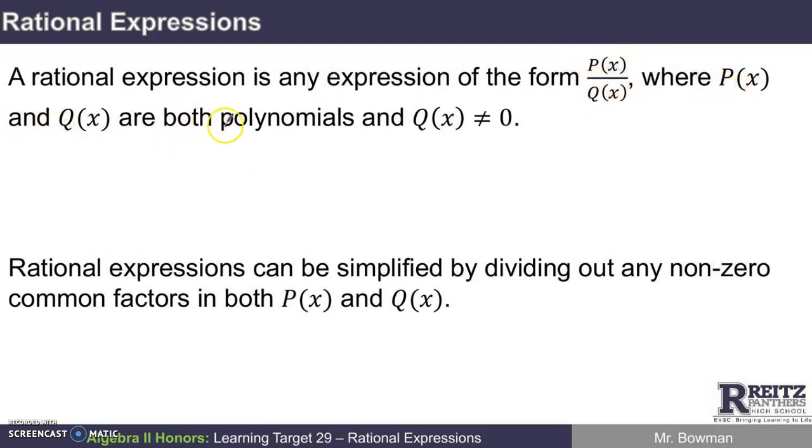where P(x) and Q(x) are both polynomial functions, and Q(x) does not equal zero. Of course, you couldn't divide anything by zero and get a value.